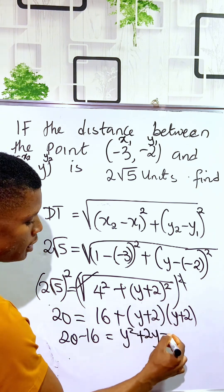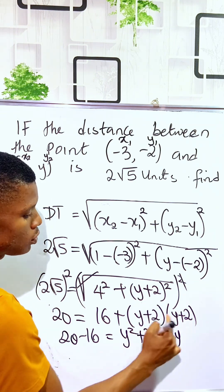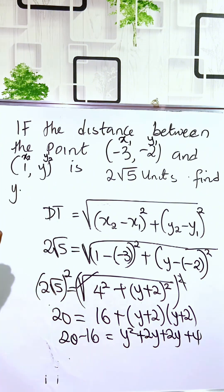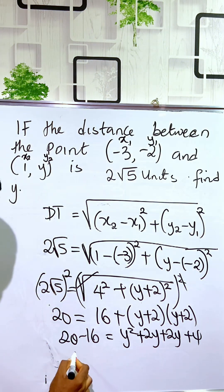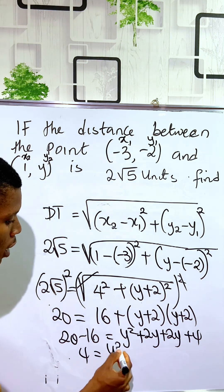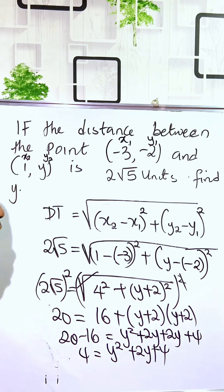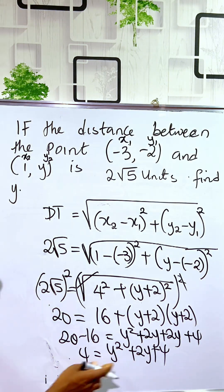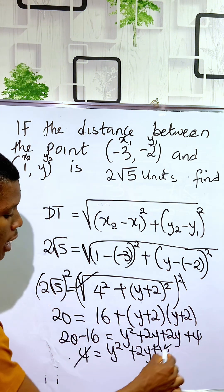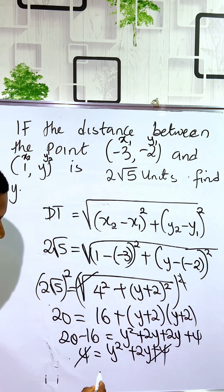So here we have it that 4 is equal to y squared plus 2y plus 4. So here if we minus 4 from both sides, you can now see that 4 and 4 minus, we have it that...